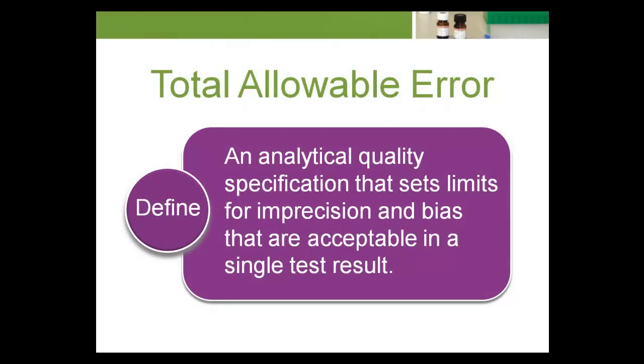Total allowable error TEA is an analytical quality specification that sets limits for imprecision and bias that are acceptable in a single test result. It's a process control tool based on human biological variation data and can be used as a secondary feedback mechanism for statistical process control analysis.